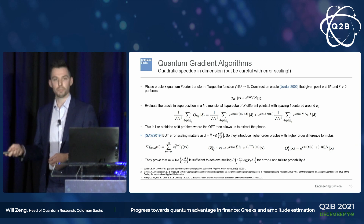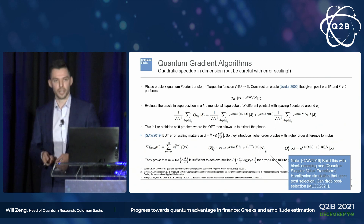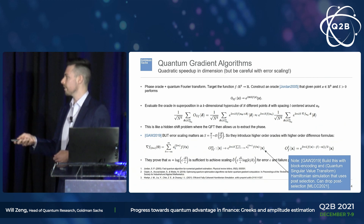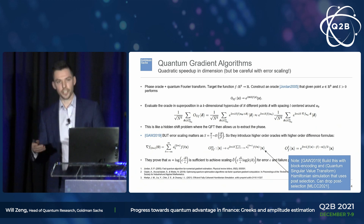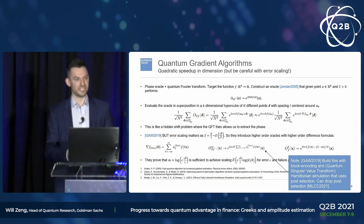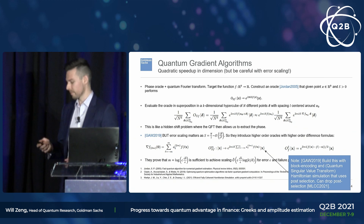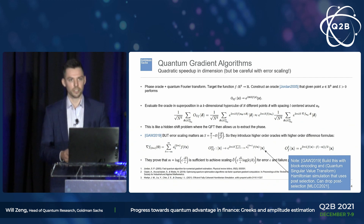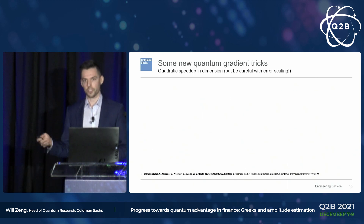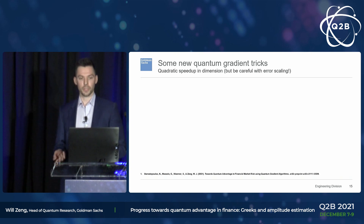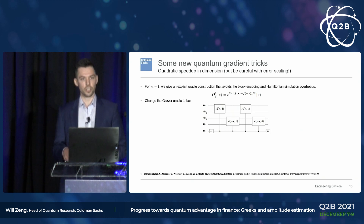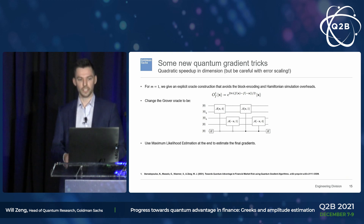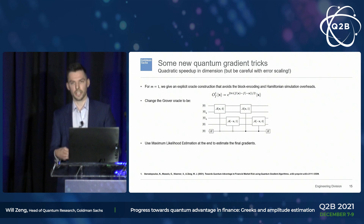We then investigate how loose these bounds are and how to do better in practice. This is where Toby's talk connects: the mth order oracle is built using block encoding and a singular value transform-based Hamiltonian simulation algorithm — not just for simulating fermions, but also for gradients. We introduce a couple of additional improvements: for the m equals 1 case, we give an explicit construction that avoids block encoding and Hamiltonian simulation entirely, and we introduce maximum likelihood estimation at the end to improve how gradients are estimated.